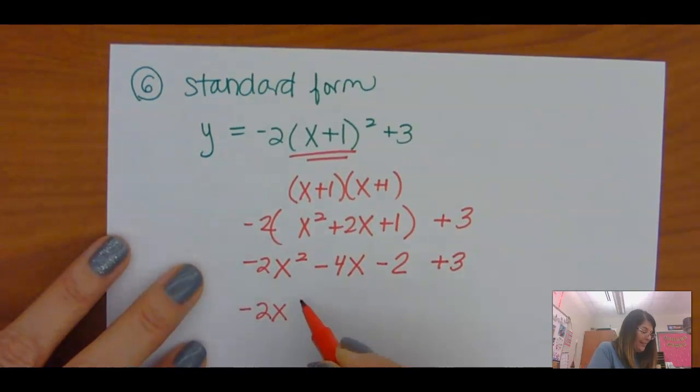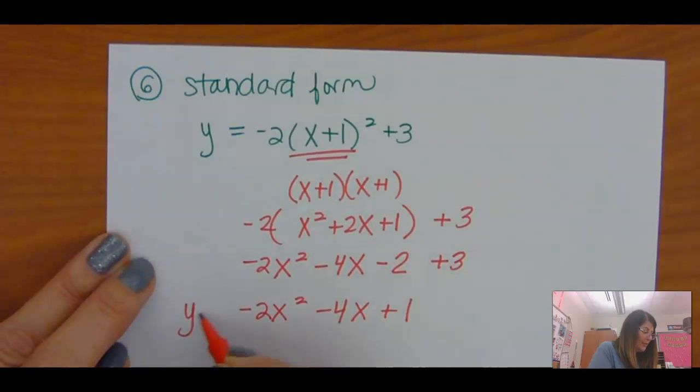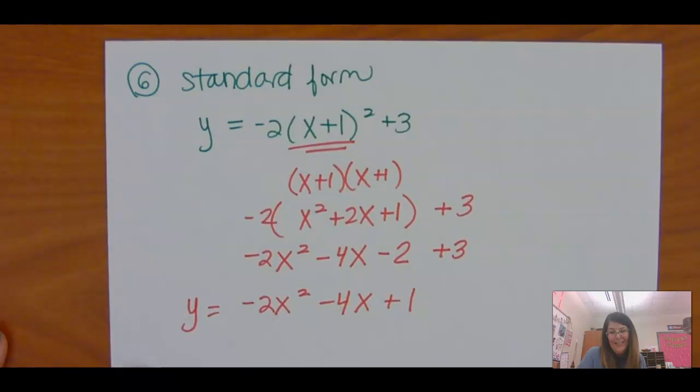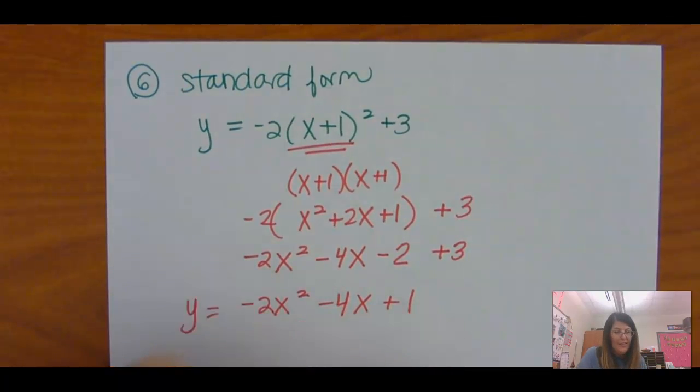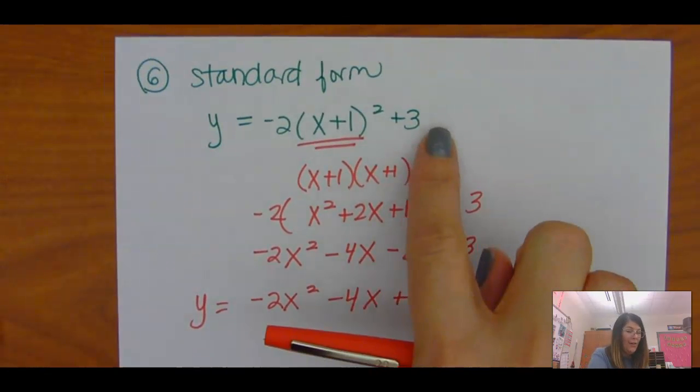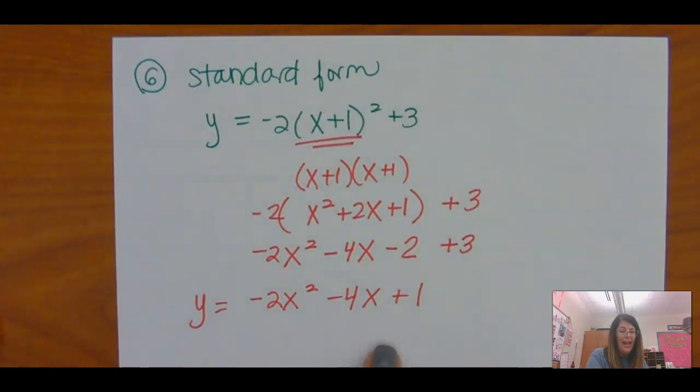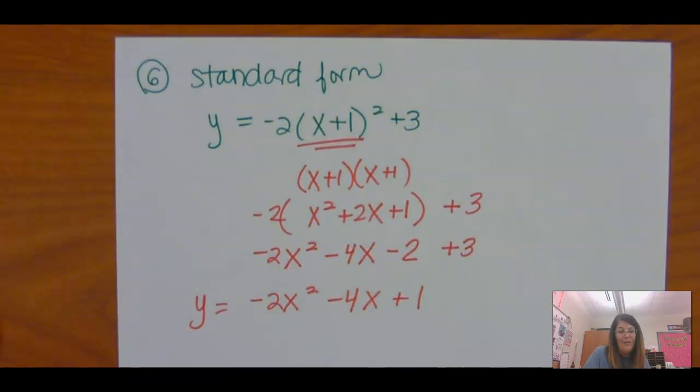And I rewrite this negative 2x squared minus 4x plus 1. So now it's in standard form. Standard form has the biggest degree and goes in decreasing order. And it started out in vertex form and I ended up in standard form.